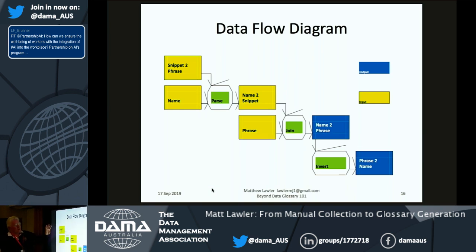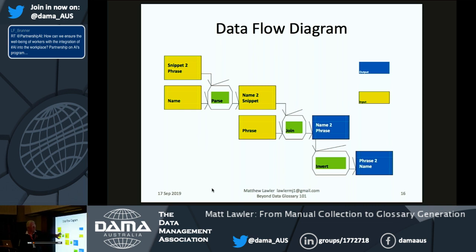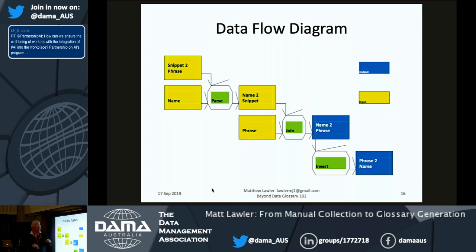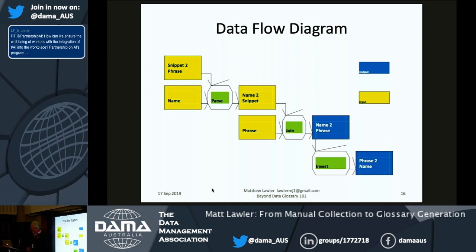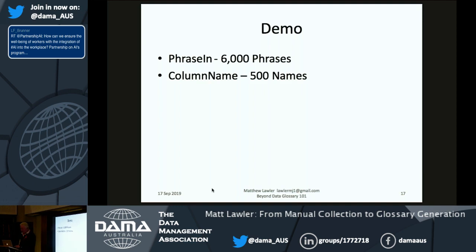To summarize the data flow: snippets-to-phrases are inputs to the parse program, which generates name-to-snippet — each name split into its snippets. This is joined to the phrases you've defined, generating name-to-phrase. That is then inverted to become phrase-to-name. The name-to-phrase table has 200,000 rows matching the column count, while the phrase-to-name table has 6,000 rows — the one you really want to examine to assess how well your corpus breaks down all the names.